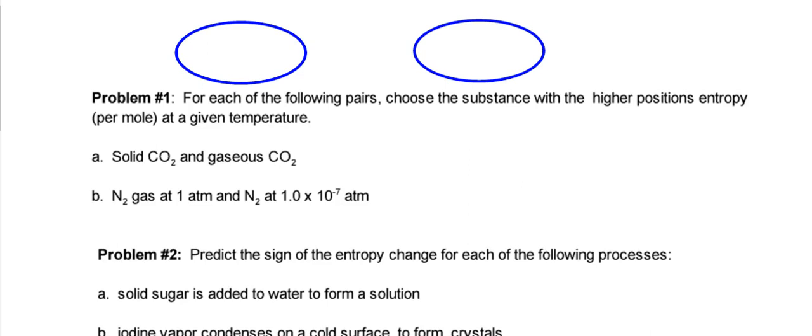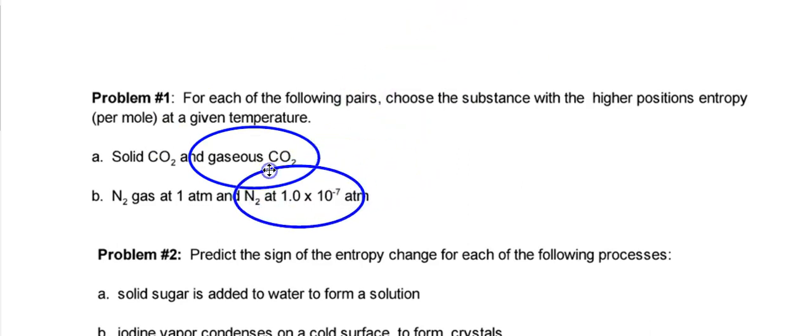Let's take a look at the next page. Problem number one. For each of the following pairs, choose a substance with a higher positional entropy per mole at a given temperature. Why don't you go ahead and pause this? Do A and B. Come back. Okay. How'd you do? So solid to gas. Hopefully this is a no-brainer. I kind of went on and on about this. So what is it going to be? It's going to be your gas. Much more random, much more disorderly. What about the same gas at one ATM versus a very, very, very low ATM? So what's the relationship between pressure and volume? As you have a low pressure, don't you have a huge volume? That's kind of like what the gas is. The more volume you have, the more different ways those gas molecules can be arranged. So that's going to have your highest entropy as well.